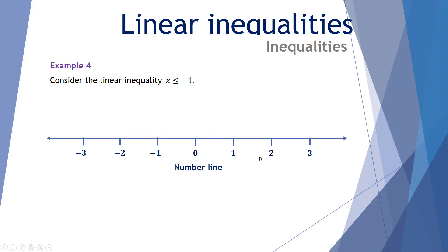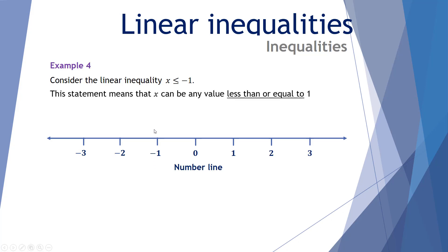Example number 4: consider the linear inequality x ≤ -1. This statement means that x can be any value less than or equal to negative 1. On our number line, it is less than or equal to negative 1. The solid circle represents equal to as well, meaning negative 1 is included in the solution set.